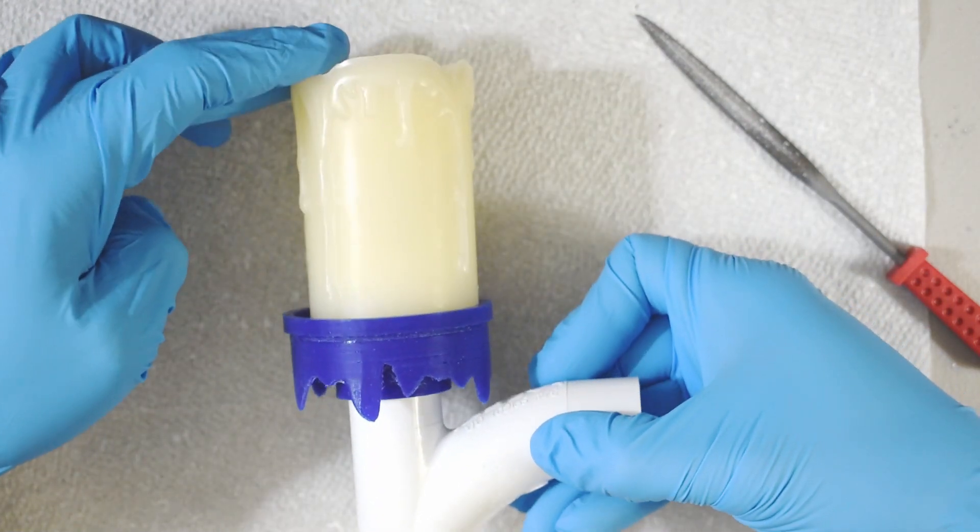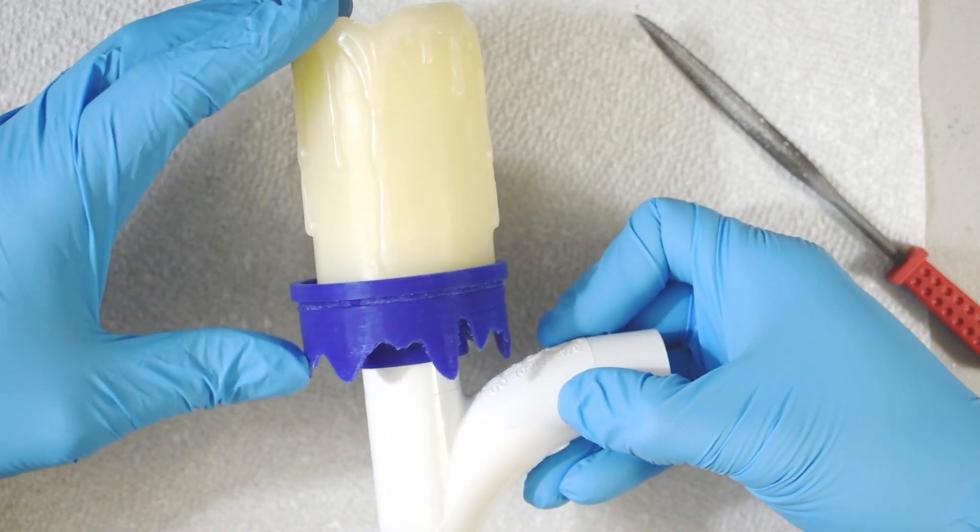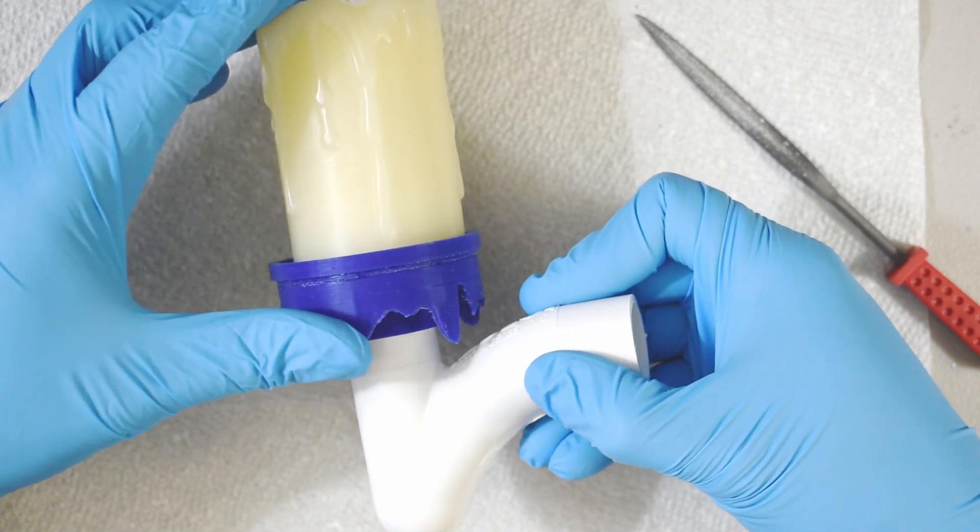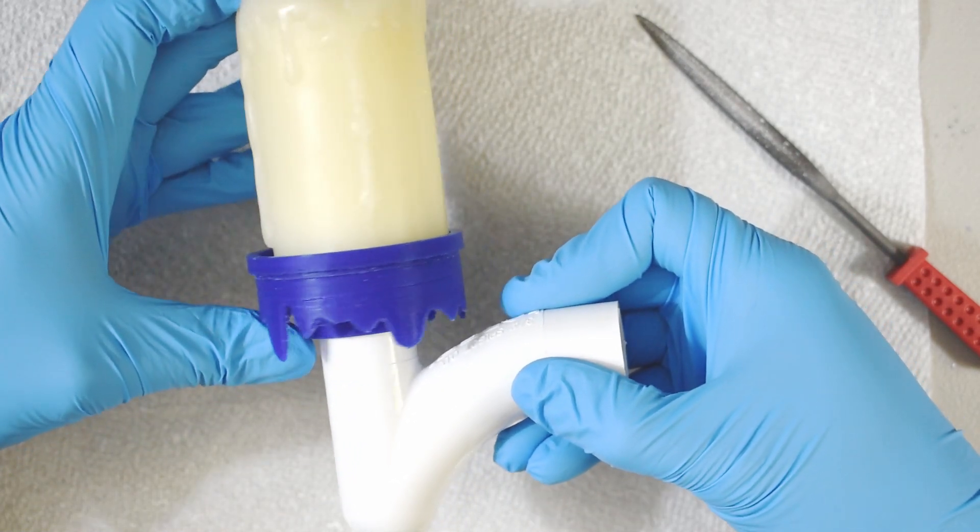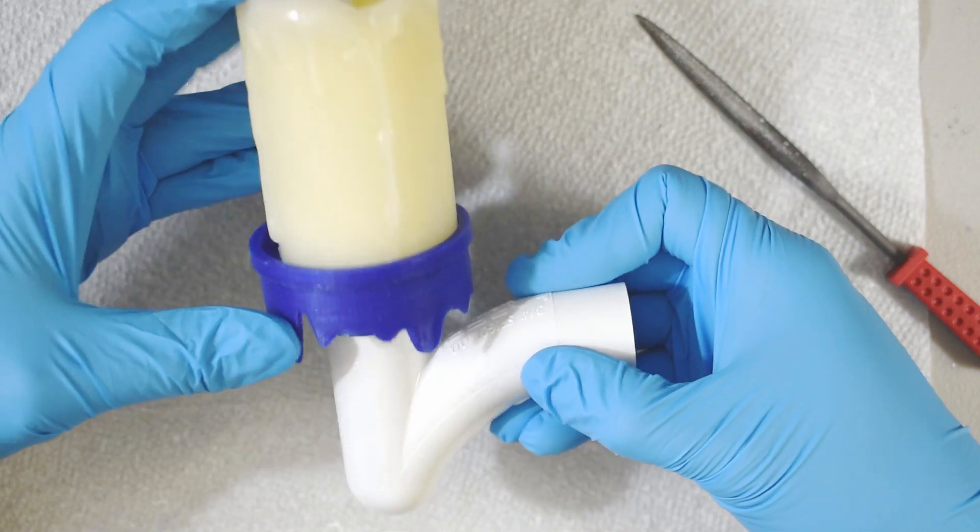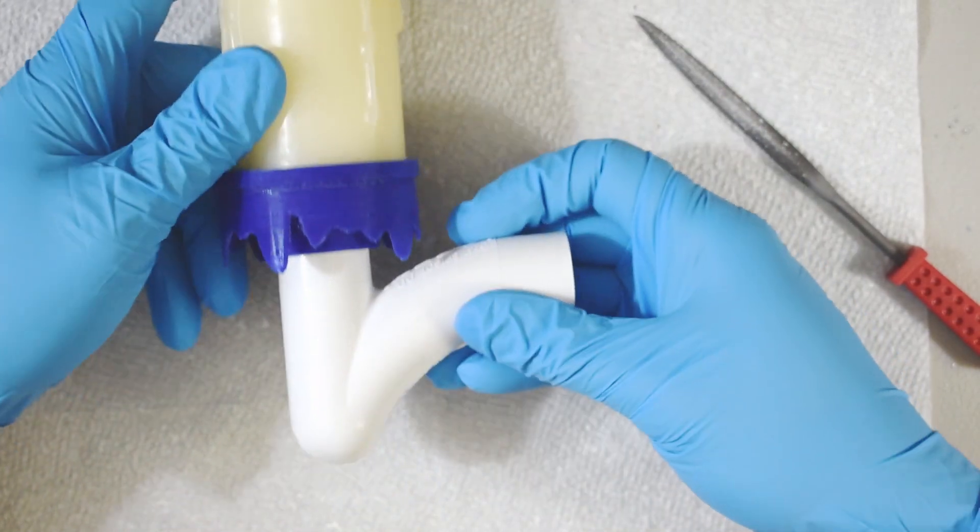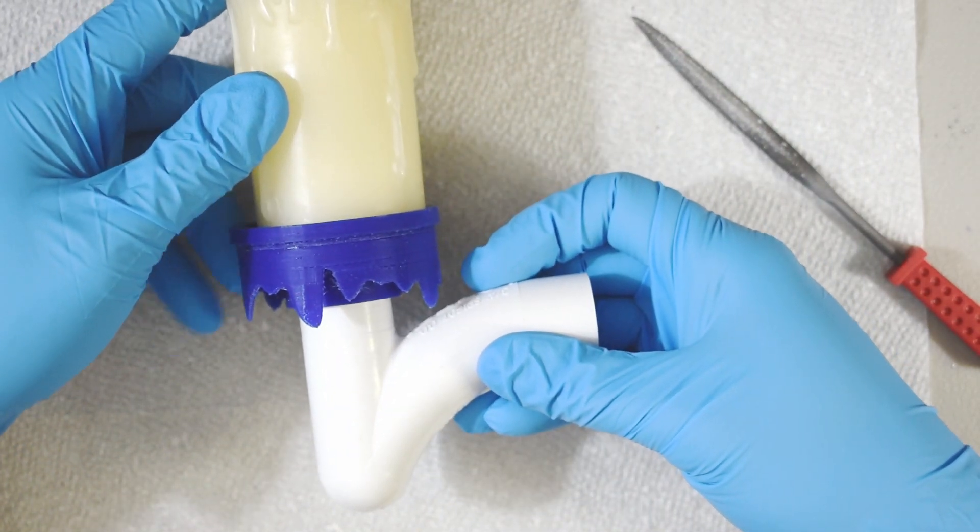Basically it'll look like that. This is supposed to look like dripping wax, so you just paint this whatever colors you want in order to give it the look. The edges keep it from falling over, and that's basically the whole assembly of this.